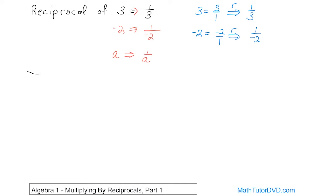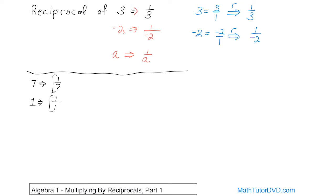Let's do a couple of additional quick examples. If you have the number 7, which really is 7 over 1, the reciprocal is just one-seventh. What about the number 1? The reciprocal is just 1 over 1. Now here's where it becomes interesting: if you have the fraction 1 over 11 and you're asked to find its reciprocal, you just flip it upside down, so it becomes 11 over 1, which is 11. And if you have the fraction negative 2 thirds, you flip it over so it becomes negative 3 halves. The concept of a reciprocal is the same whether it's a whole number or a fraction — you just flip it over.